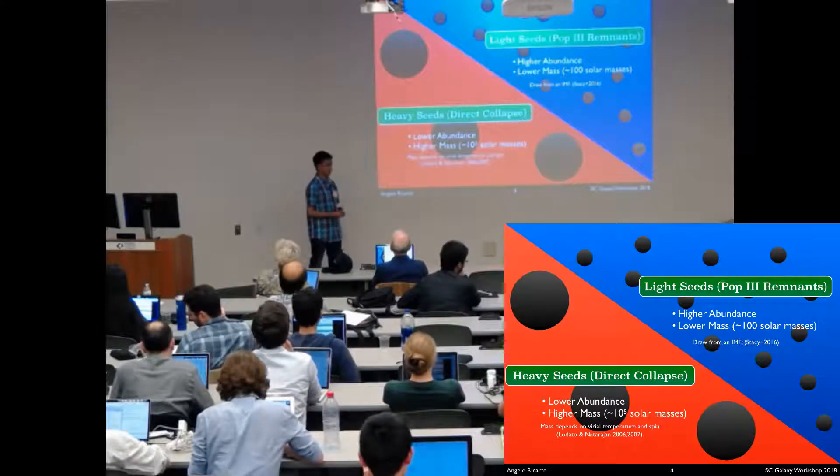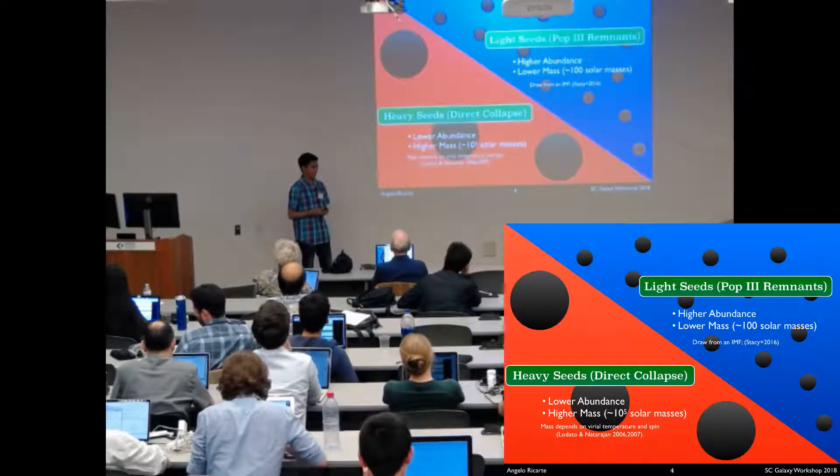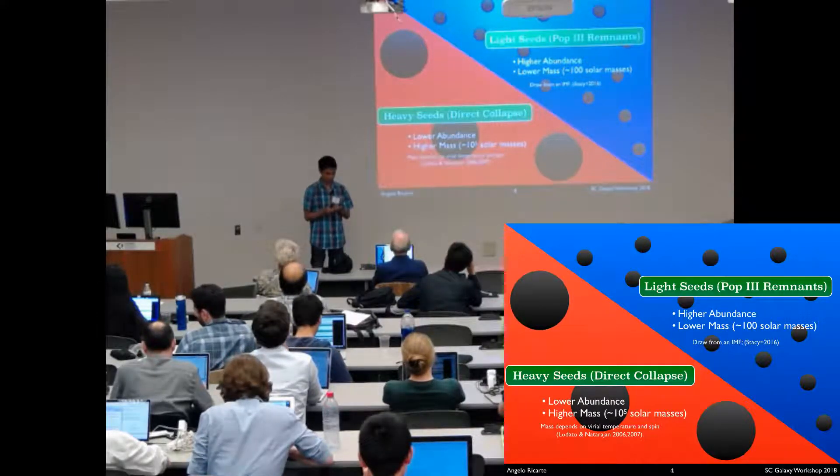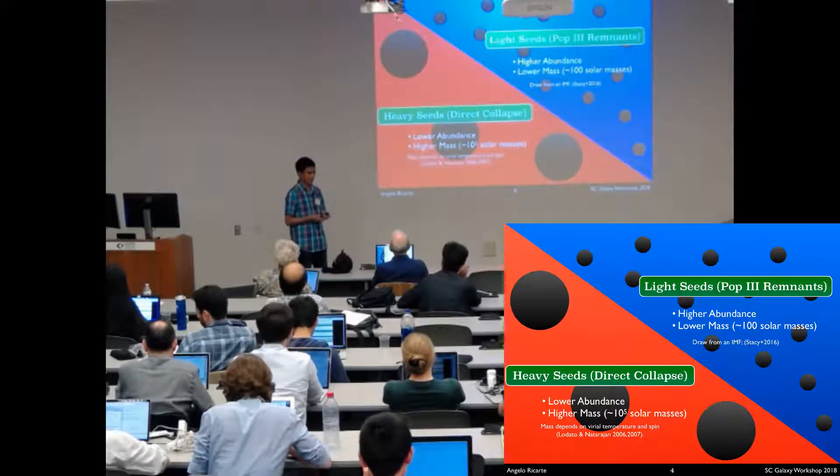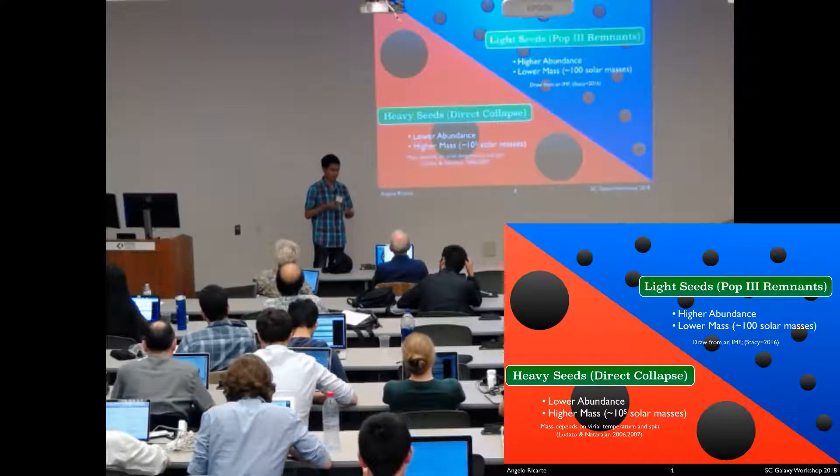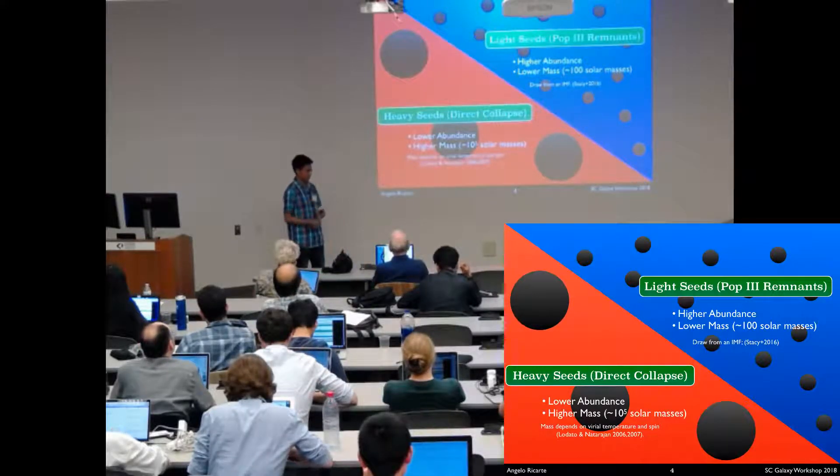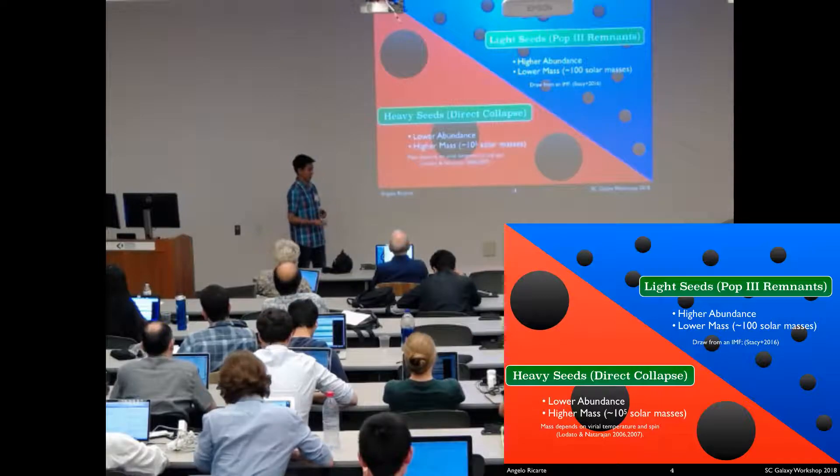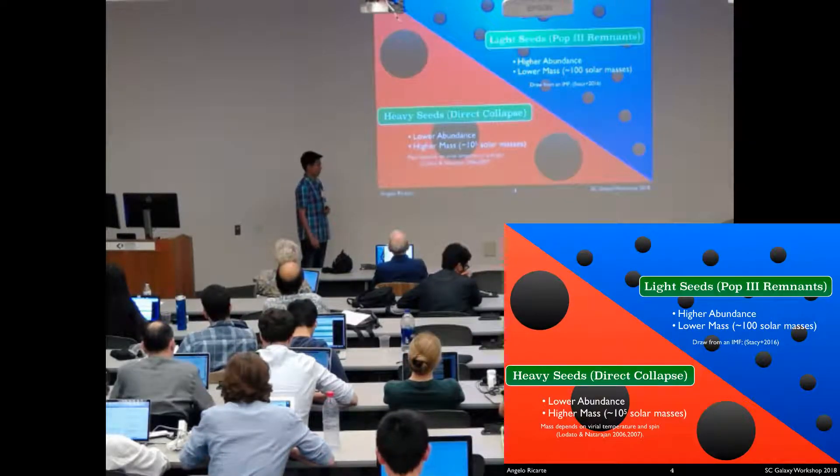The mass here depends on the virial temperature and spin and is that same model that Colin DeGraaf just brought up, Lodato and Natarajan 2006, whereby a protogalactic disk goes Toomre unstable and drives a mass flow to the center of the protogalaxy, which is assumed to all assemble a black hole.